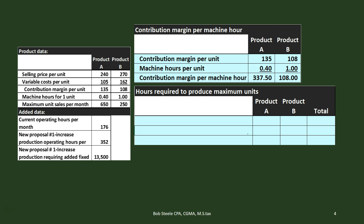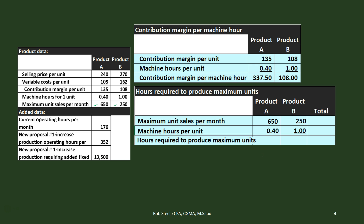Next, we calculate the hours required to produce the maximum number of units. We think we can sell 650 of A and 250 of B per month. It takes 0.4 hours per unit for A and 1 hour per unit for B. So producing the maximum requires 260 hours for A (650 × 0.4) and 250 hours for B, totaling 510 hours. We only have 176 — that's why this is our bottleneck.